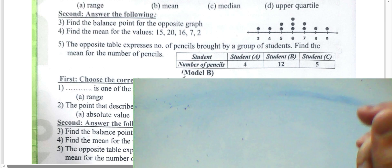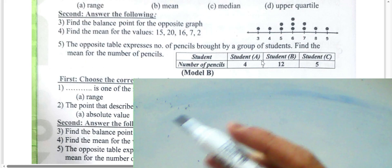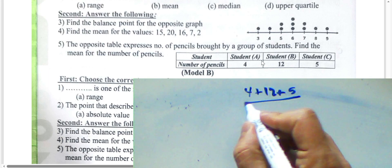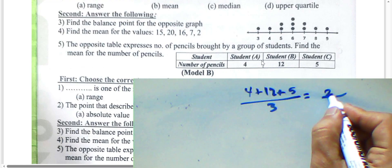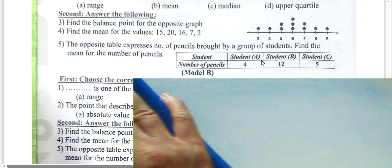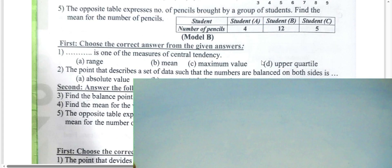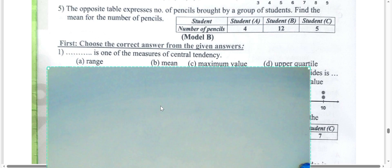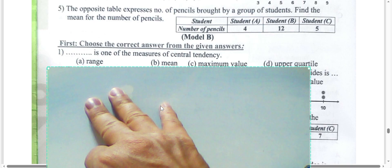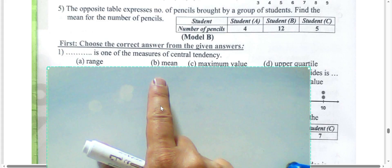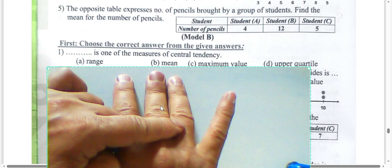Next question: find the mean for the number of pencils. Collect four plus twelve plus five and divide by three. Four plus twelve is sixteen, sixteen plus five is twenty-one. Twenty-one divided by three equals seven. Next question: what is one measure of central tendency? The mean is one of the measures of central tendency. We have mean, median, and mode.